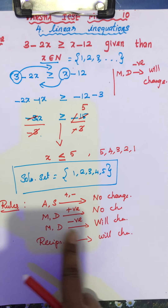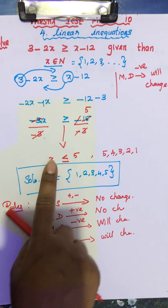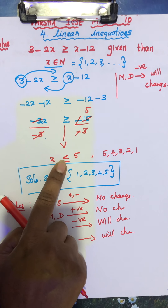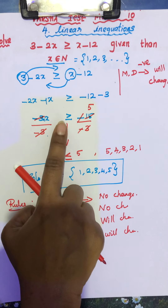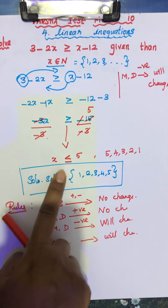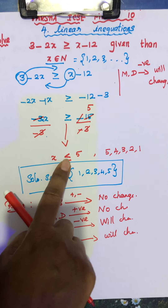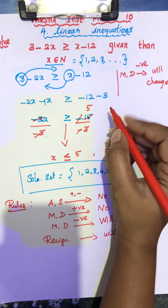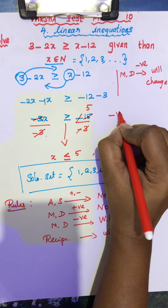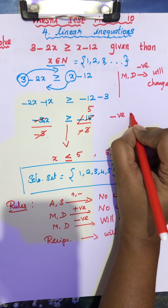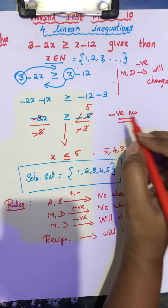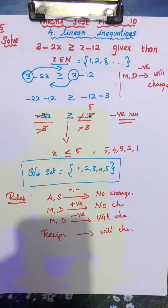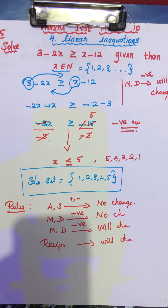If you know the rules well, you can do the sum. The inequality changed here — the greater than sign changed into less than because we divided by a negative number. That is very important. I hope you all understand. Thank you, students.